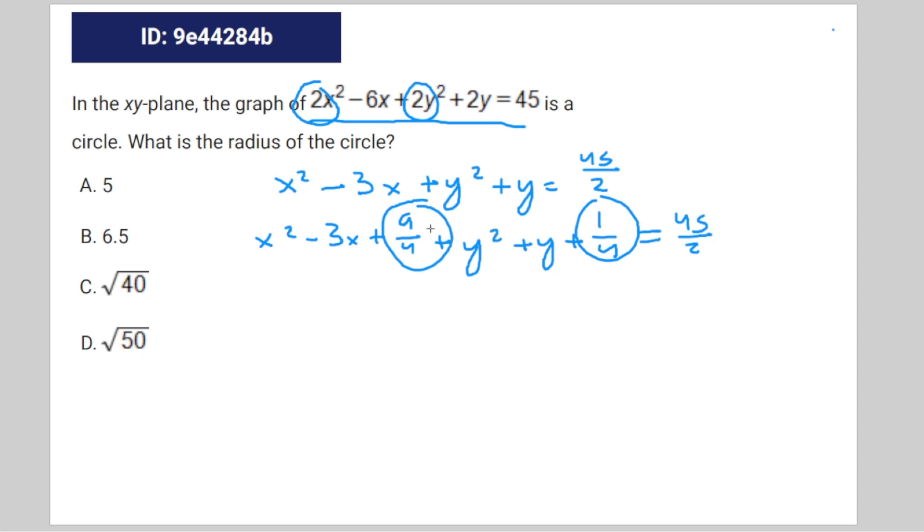45 divided by 2 plus 1 fourth plus 9 fourth. So to find the radius you're gonna take 45 divided by 2 plus 1 fourth plus 9 fourth and add them together. That's gonna be 90 fourths plus 10 fourths, which equals 100 fourths, which is equal to 25.